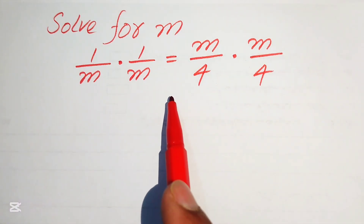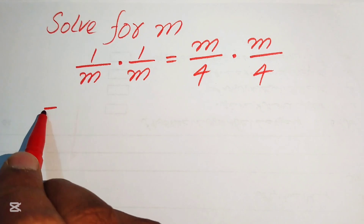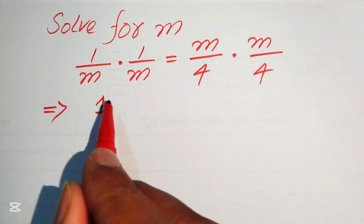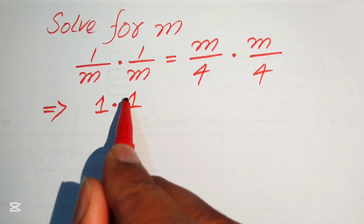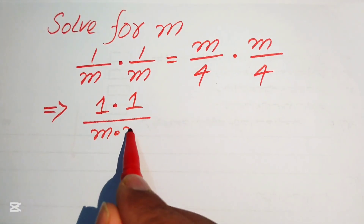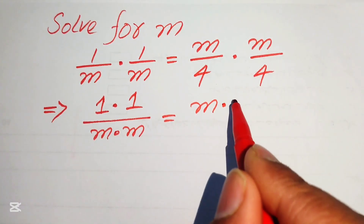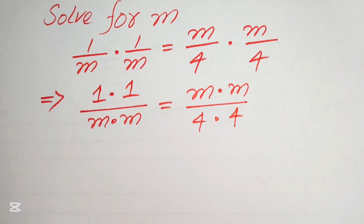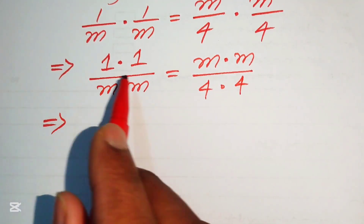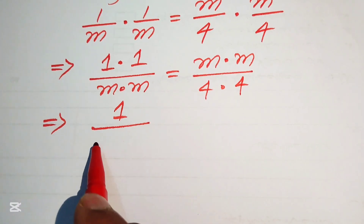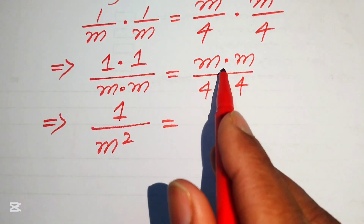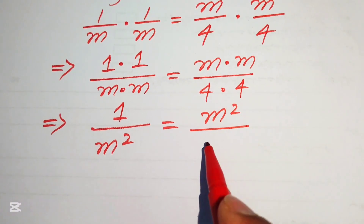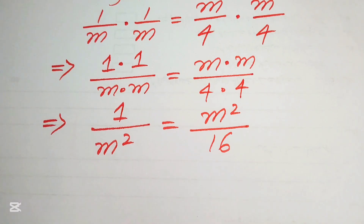The very first step is to multiply the numerator terms together and denominator terms together. It will be written as 1 × 1 divided by m × m equals m × m divided by 4 × 4. So 1 times 1 is 1, m times m is m², and similarly m times m is m² and 4 times 4 is 16.